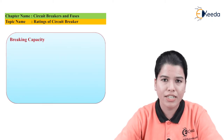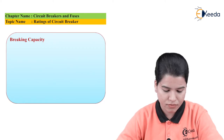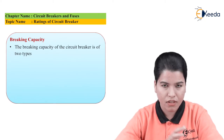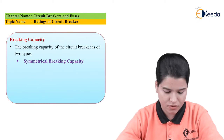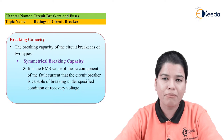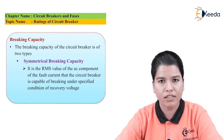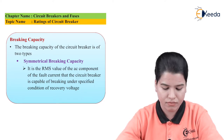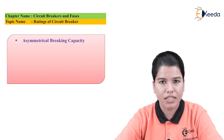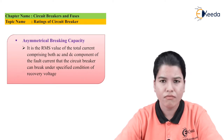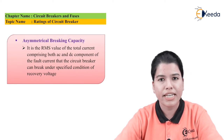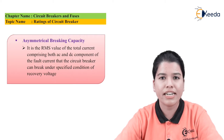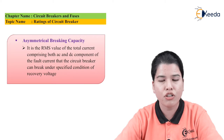The breaking capacity of a circuit breaker is classified into two types. First, symmetrical breaking capacity, which is the RMS value of the fault current that the circuit breaker is capable of breaking under the specified condition of the recovery voltage. Second, asymmetrical breaking capacity, which is the RMS value of the total current consisting of both the AC component and DC component that the circuit breaker is capable of breaking under the specified condition of the recovery voltage.